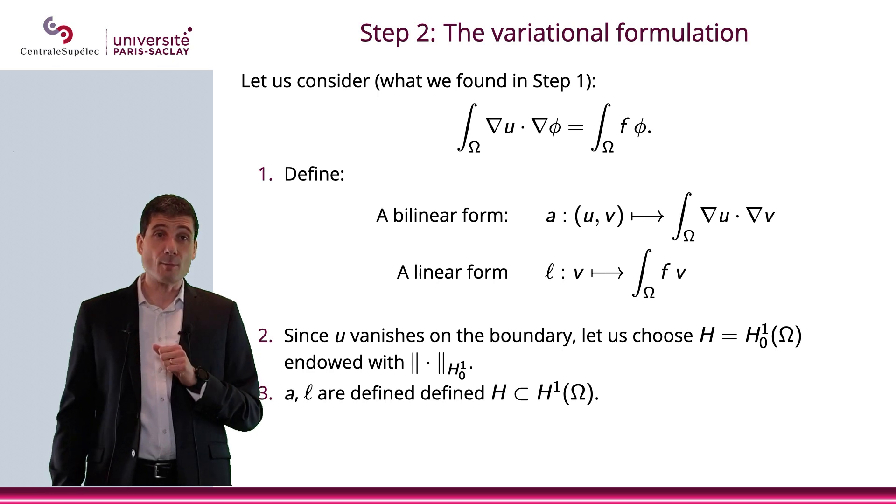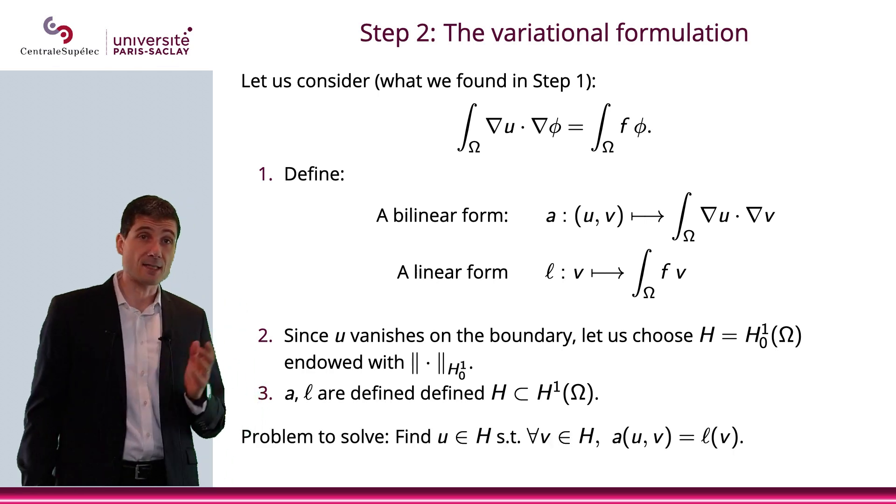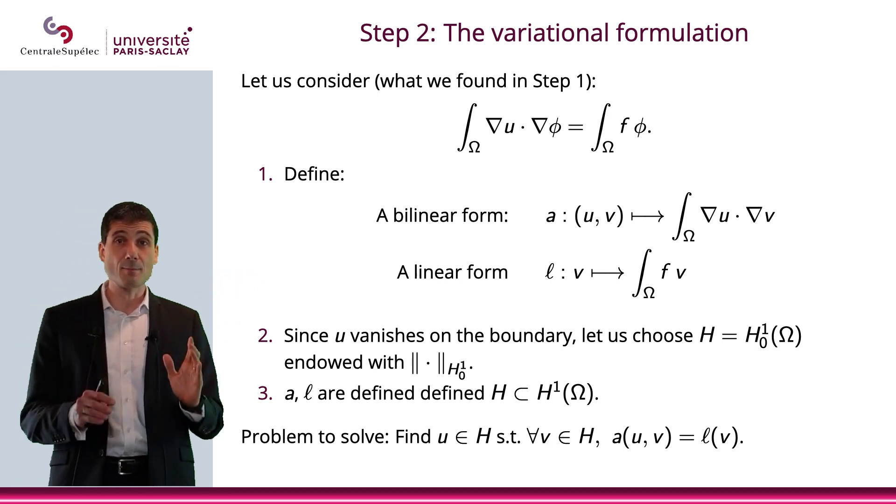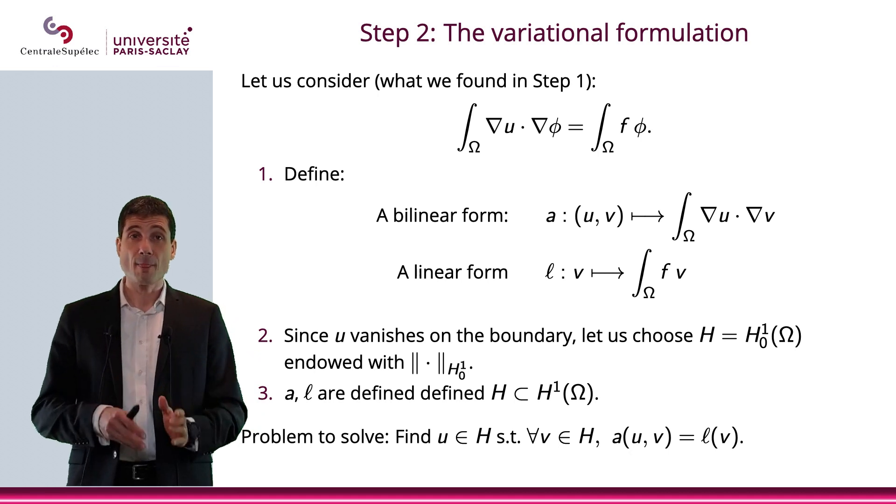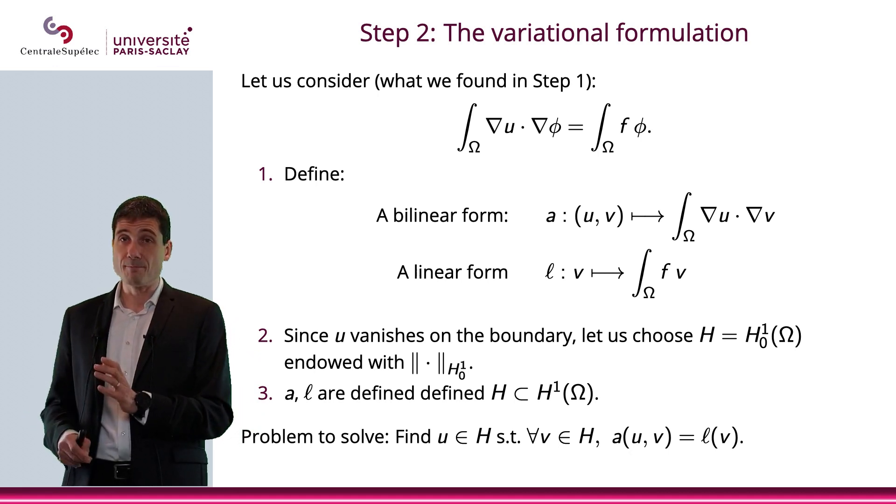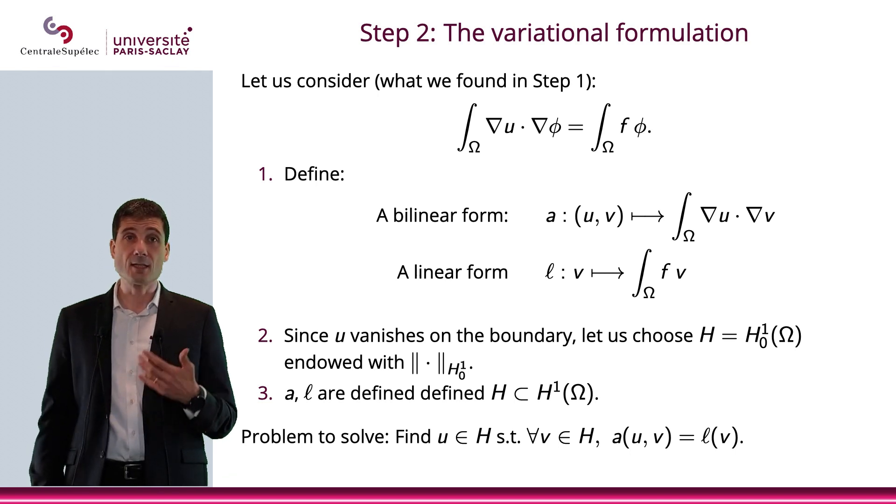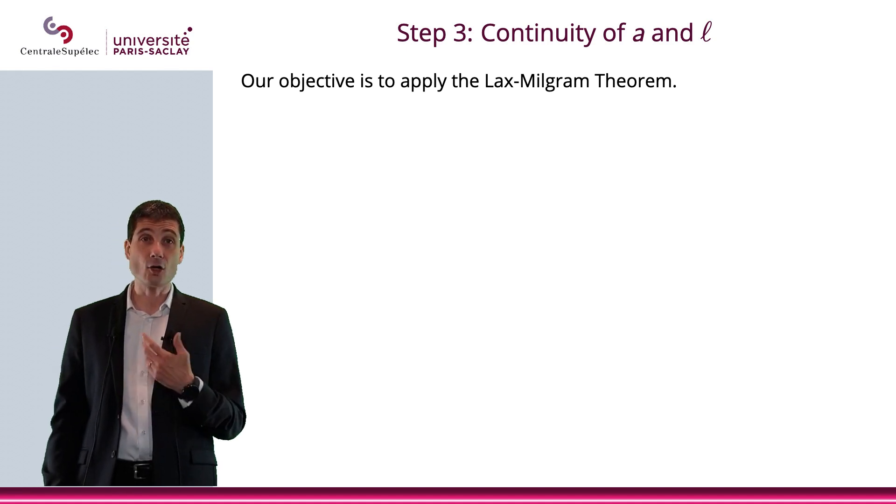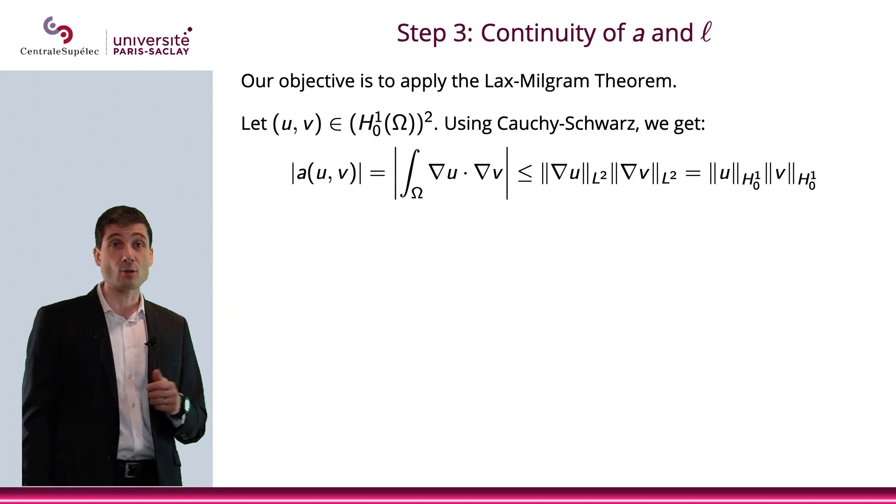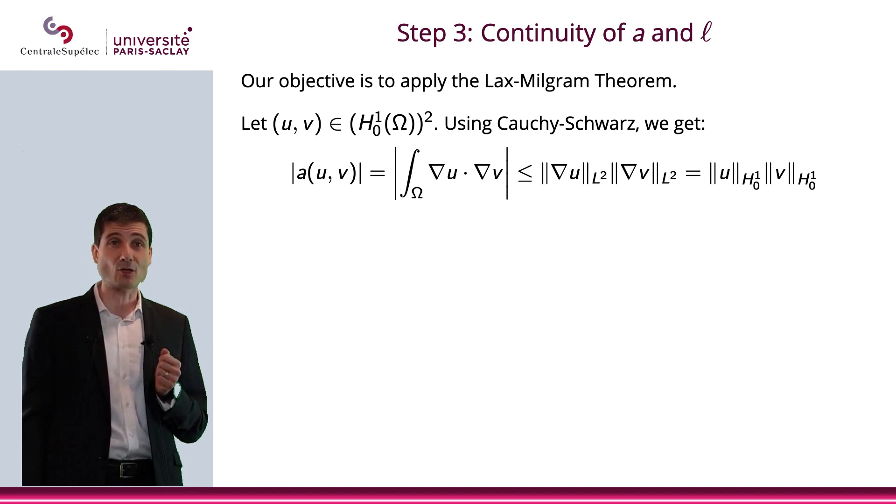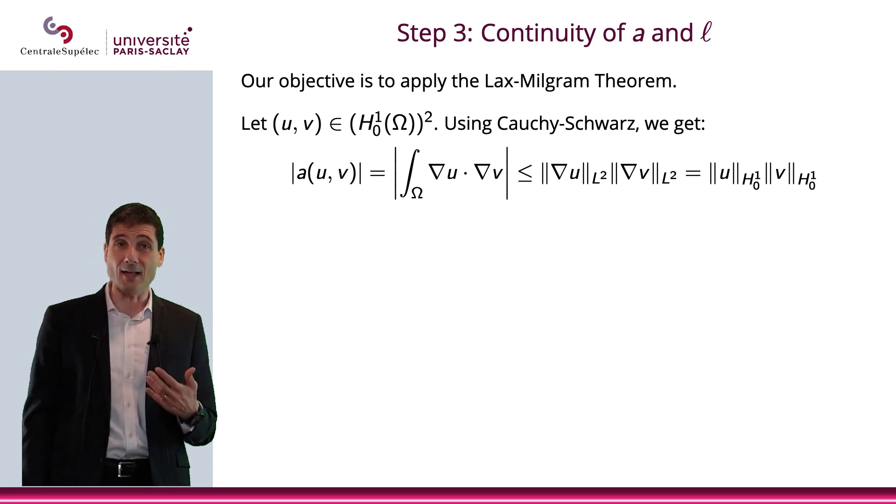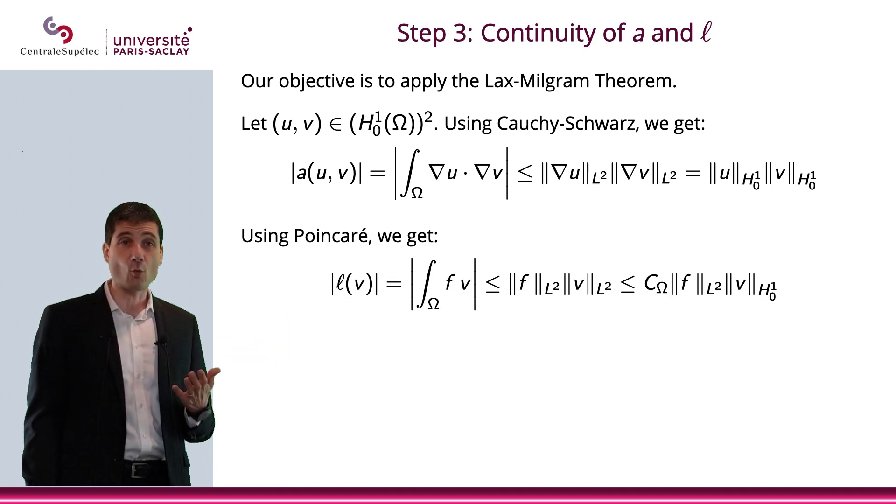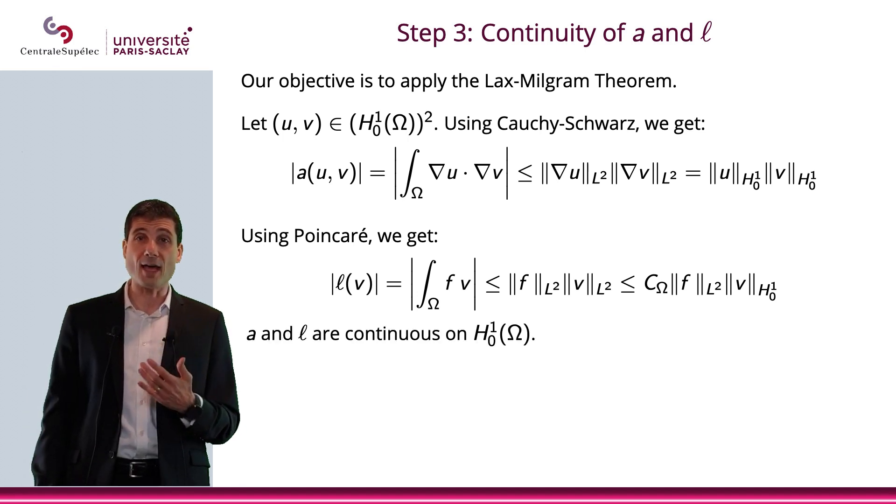Step 2 is almost complete. All we need to remark is that the equation can simply be written as for all v in H^1_0, a(u,v) equals l(v). Our intent at this point is to use the Lax-Milgram theorem. So let's check that a and l are continuous. A is continuous for the very same reasons as we had in dimension 1 in the previous video. And so is l. We use Cauchy-Schwarz for a, Poincaré for l. A and l are continuous on H^1_0.